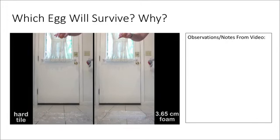To begin our exploration, I'd like you to imagine that you're about to drop an egg on hard tile and you're also going to drop an egg on a 3.65 centimeter thick piece of foam. Which egg do you think will survive and why? This question may sound obvious, but the real answer as to why one egg will survive and one egg may not may be more complex than you realize at first. Take a second, make a prediction, and in a moment we'll see what happens when we drop both eggs in real time.